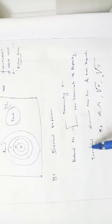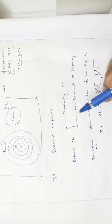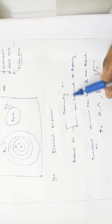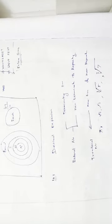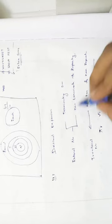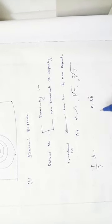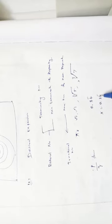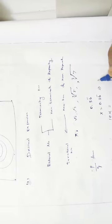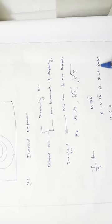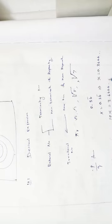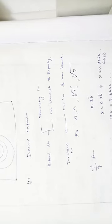In exercise 1.3, we write rational numbers in decimal form and identify what kind of decimal expansion it is. We also convert non-terminating repeating decimals to p/q form. For example, if x = 0.36̄, the bar is on one digit, so multiply both sides by 10: 10x = 3.666... Subtract the two equations to get the value of x in p/q form.